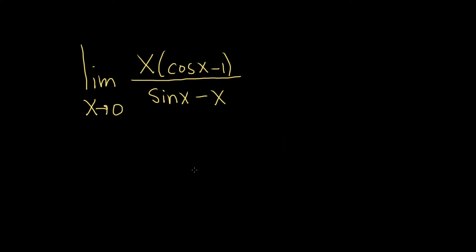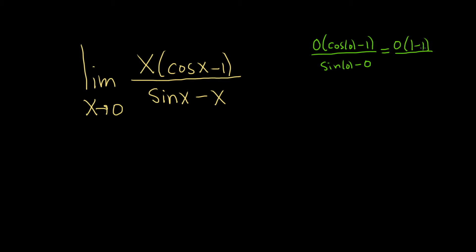In this problem we have to find the limit as x approaches 0 of this expression. The first thing you should do when finding limits is to plug in 0 and see what happens. We get 0 times the cosine of 0 minus 1, all divided by the sine of 0 minus 0. Cosine of 0 is 1, so we get 0 times 0 over 0, which gives us 0 over 0 — an indeterminate form.